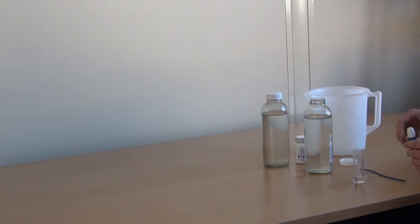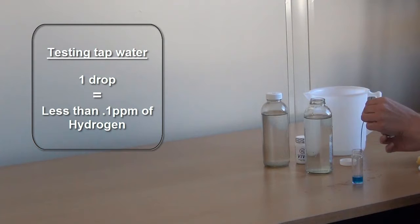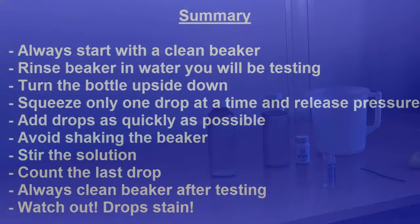Six milliliters. We'll now start adding the drops. As you can see, this time with one drop the water remains blue, meaning there is less than point one parts per million of hydrogen in the tap water.